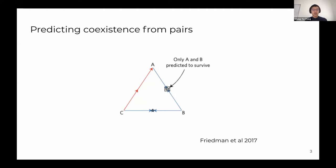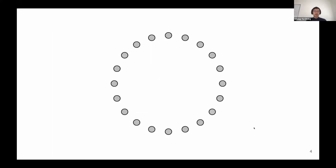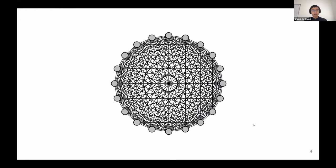However, many works on synthetic microbial communities have used species that may not naturally coexist together, or the environment used to measure pairwise competition is not the same as where the community was originally assembled. This makes it hard to understand how these factors affect the network structure we observe. Furthermore, a natural microbial community is highly diverse — a grain of soil can harbor more than a thousand bacterial taxa — and the number of pairwise combinations increases quadratically, making it very challenging to measure all combinations.